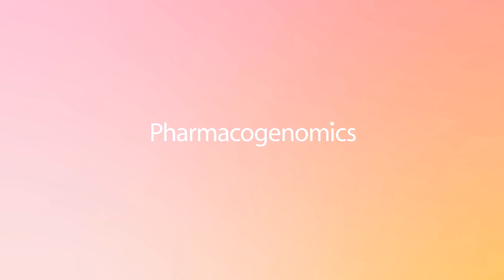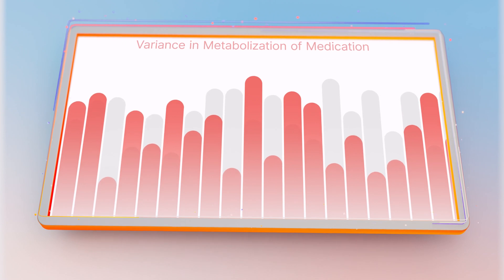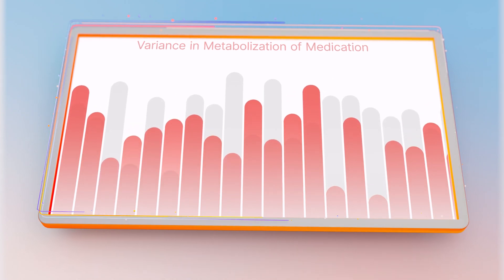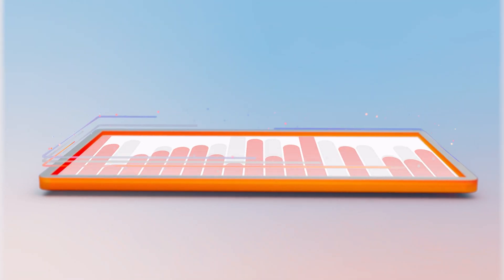Pharmacogenomics is a field of research that studies how a person's genes affect how he or she responds to medications. Its ultimate goal is to enable physicians to select the drugs and doses best suited for each person.